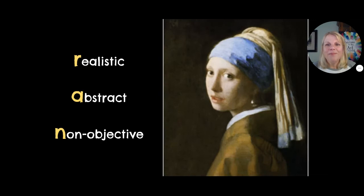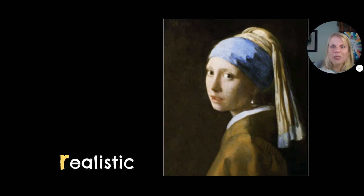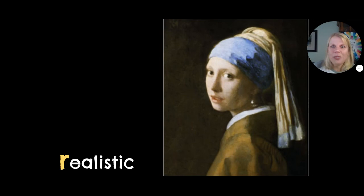Next. This is called Girl with a Pearl Earring — there's also a movie of this. R, A, or N? Yeah, this one's the easiest. This category is really easy. It looks real, you can tell what it is, it's realistic colors, it looks real. Easy.